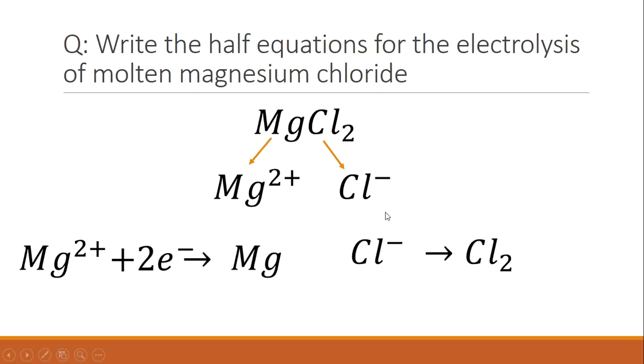On the other equation, we have the problem of the symbols not being balanced. So you always start by balancing the symbols. We need to add in a 2. The symbols are now balanced. However, we have two negatives on this side, nothing on this side. So we need to add two electrons and our equation is now balanced.